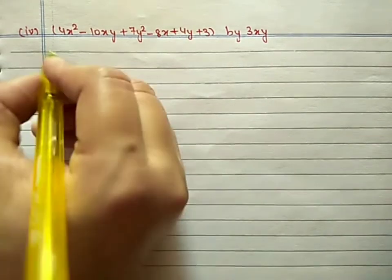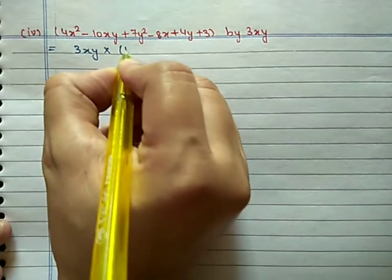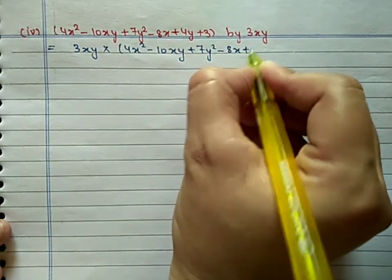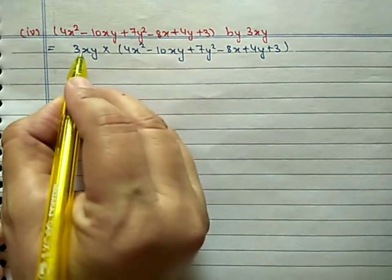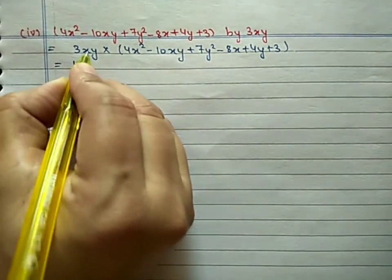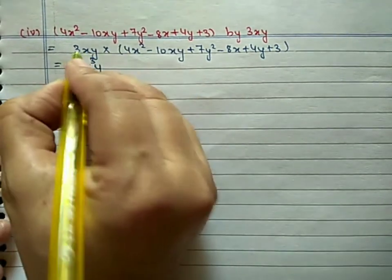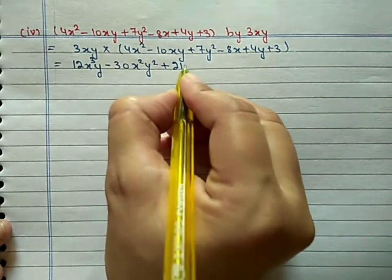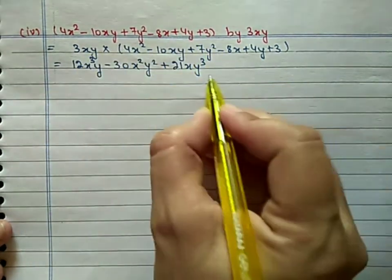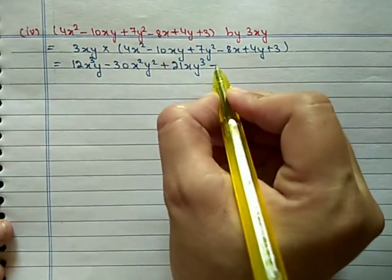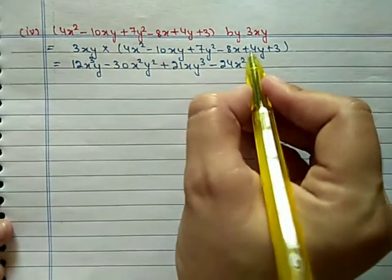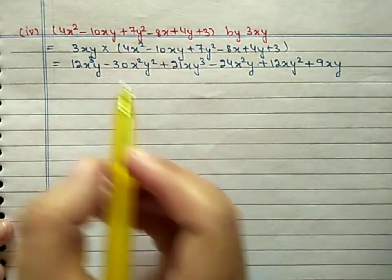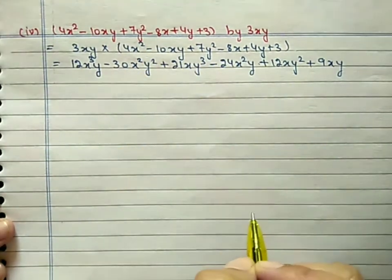Fourth part: Write 3xy first and multiply by (4x² − 10xy + 7y² − 8x + 4y + 3). 3 × 4 = 12: x has powers 1+2 = 3, and y: 12x³y. Then 3 × 10 = 30: −30x²y². Then 3 × 7 = 21: 21xy³. Then 3 × 8 = 24: −24x²y. Then 3 × 4 = 12: 12xy². And 3 × 3 = 9: 9xy. The plus symbol outside means all signs remain as they are.